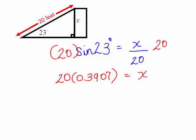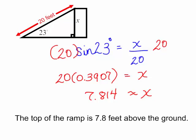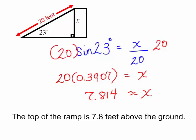I will have just X. Keep multiplying. And 20 times 0.3907 is 7.814. Once again, this is all approximately. I have rounded. And the problem said rounded to the nearest tenth of a foot. So the top of the ramp is about 7.8 feet above the ground.